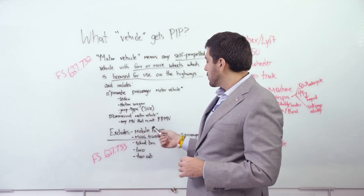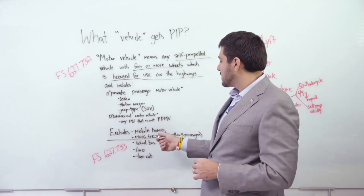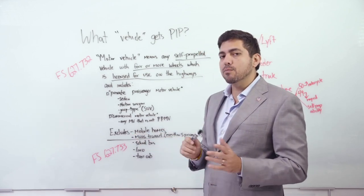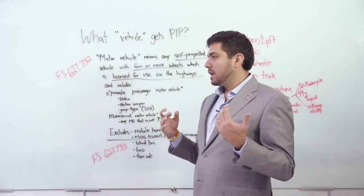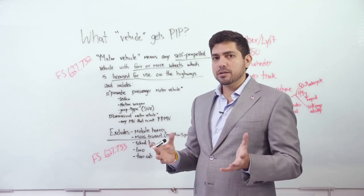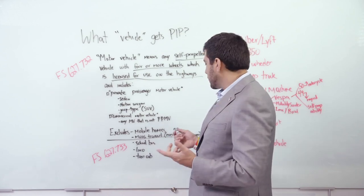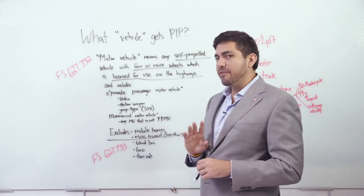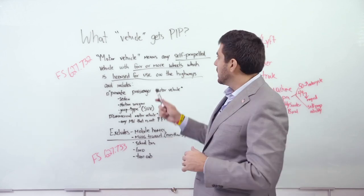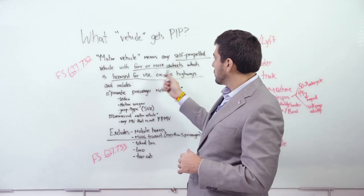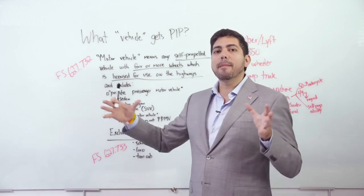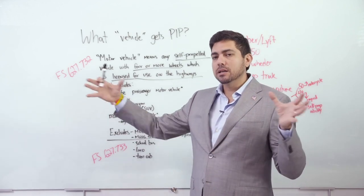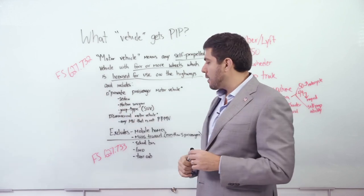So that includes, this statute was written a million years ago, a sedan, a station wagon, I haven't seen one of these although I think they're making a comeback, Jeep type. We call those SUVs now. When I think of a Jeep type, I'm thinking of the Jeep Wrangler, but it includes SUVs and pickups.